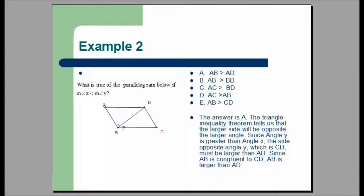Therefore, we have a triangle with angles x and y. The triangle inequality theorem tells us that the larger side will be opposite the larger angle. Since y is the larger angle, DC will be larger than the side opposite x, which is BC. Now, AB is congruent to DC and AD is congruent to BC. That means that AB is larger than AD, and the correct answer is A.